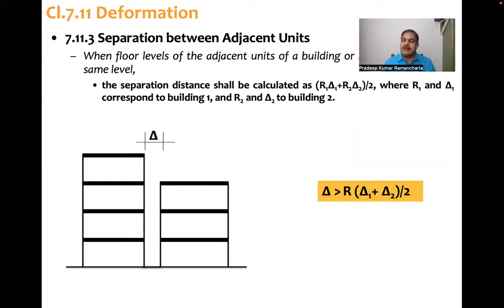So delta is greater than R1 into delta 1 plus delta 2 by 2. And if it is two different buildings, R1 delta 1 plus R2 delta 2 by 2.